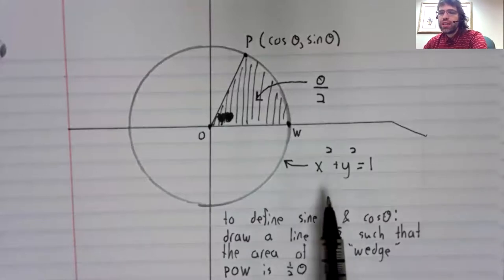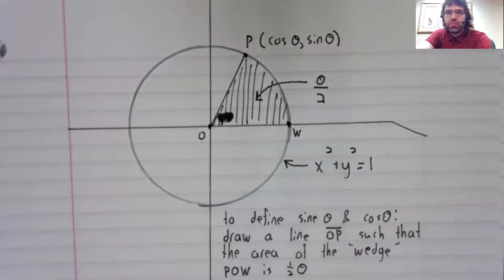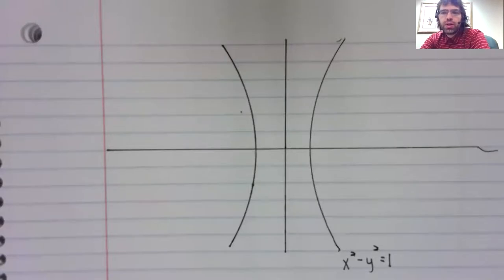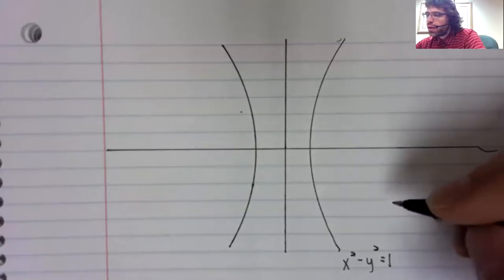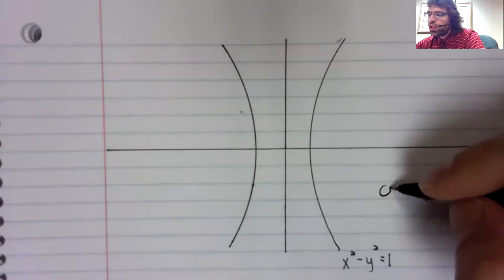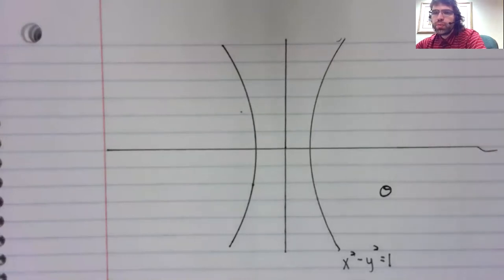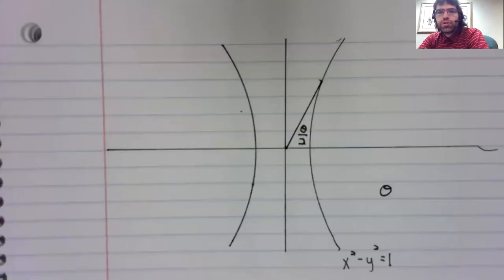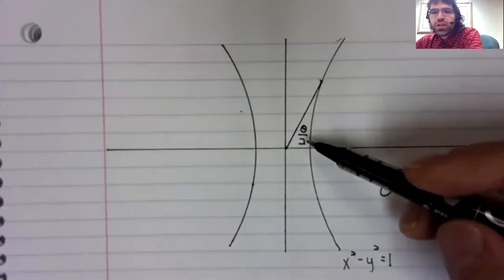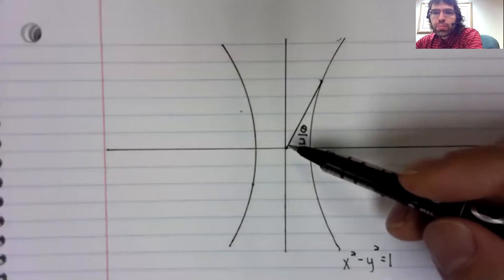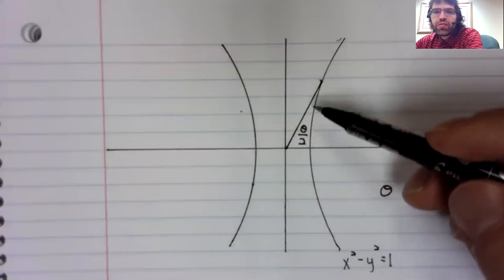You could change the conic section to a hyperbola x squared minus y squared equals one. And if you have some number theta, whose hyperbolic sine and hyperbolic cosine you're interested in, you could create a region using a straight line, just like we did with the unit circle. This theta over two is not an angle, remember, it's the area of this region.